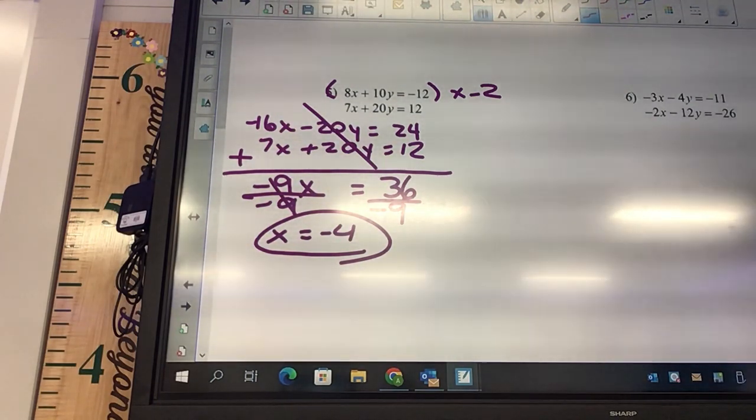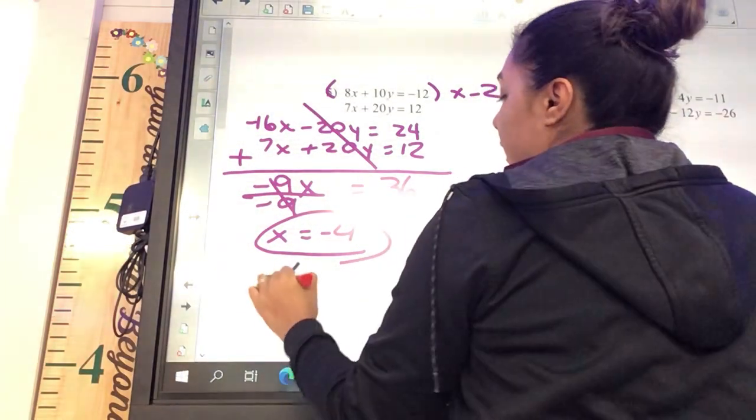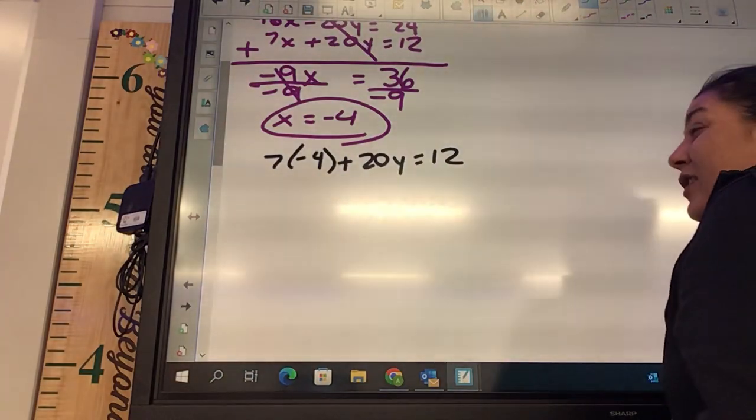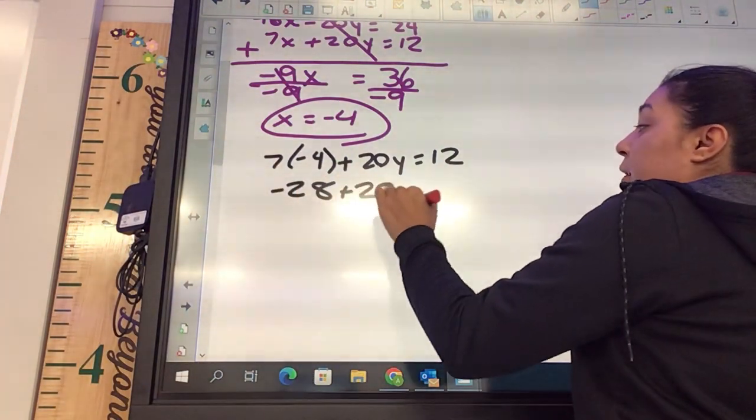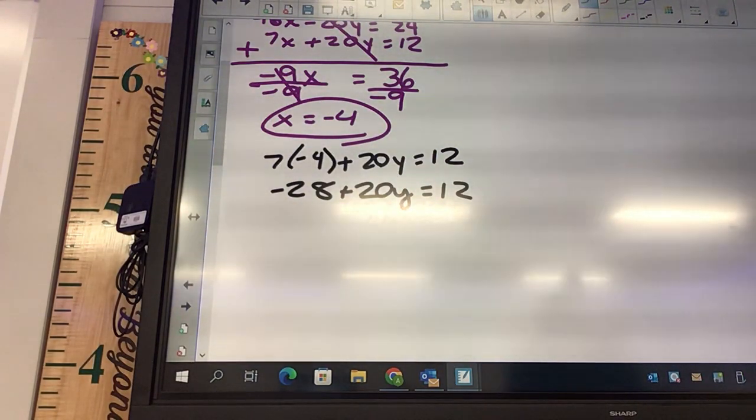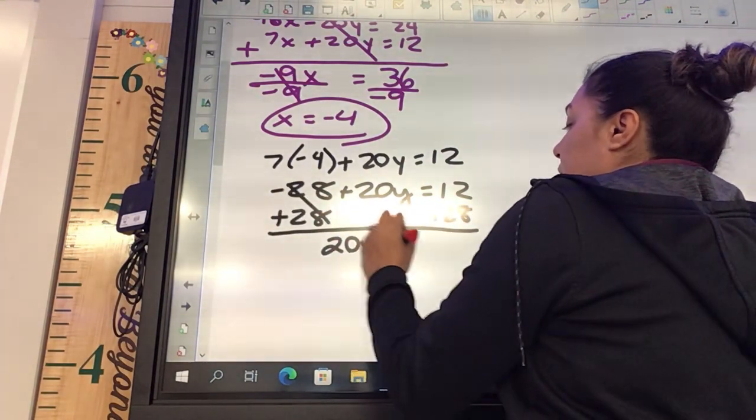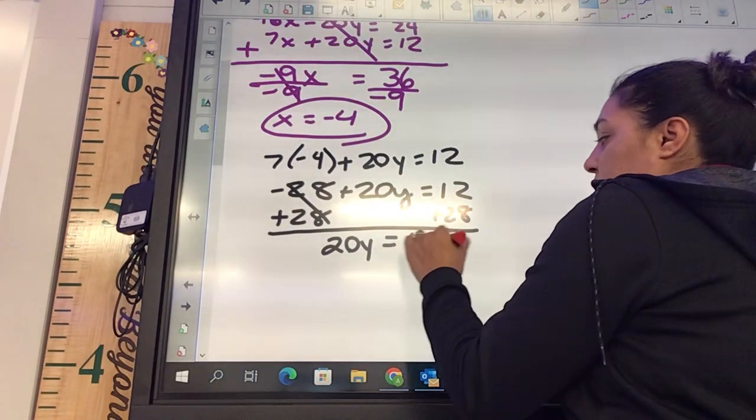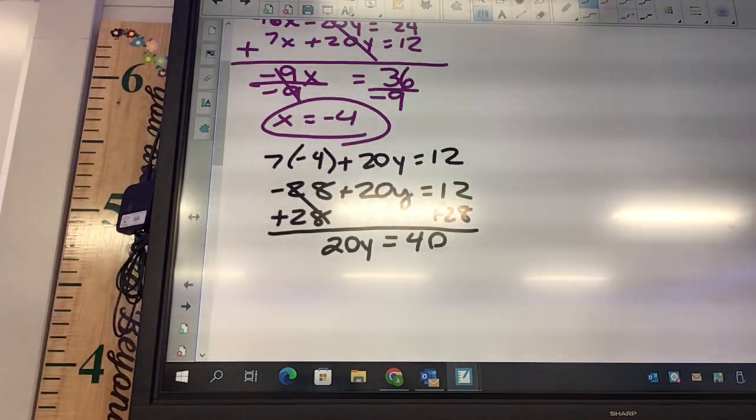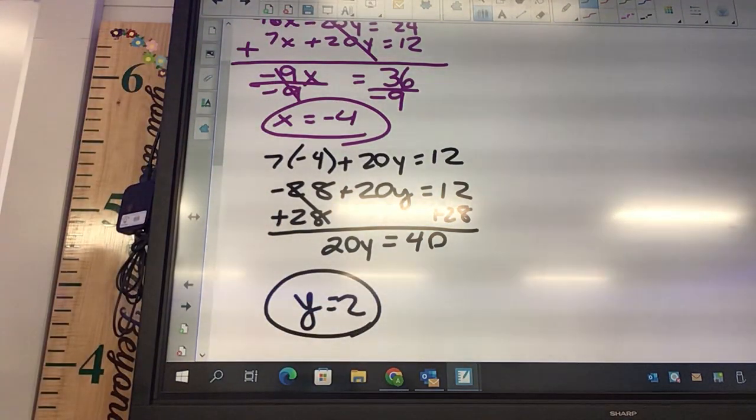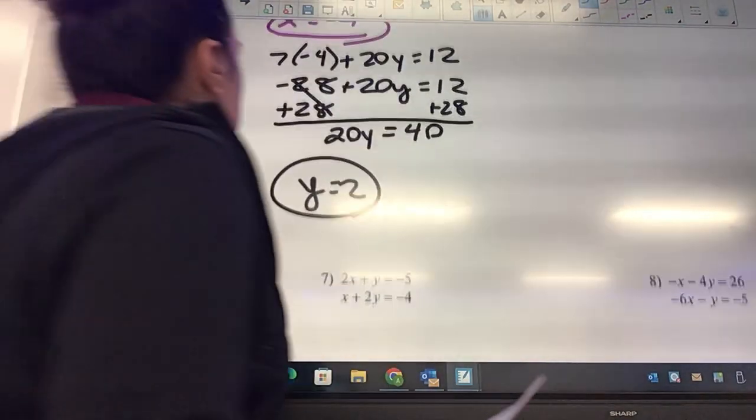Okay, which one you want to plug in? Bottom. All right, so I'm going to get 7 times negative 4 plus 20y equals 12. Okay, so that's going to be negative 28 plus 20y equals 12. We're going to add 28. Okay, so I got 20y equals something, 40? Thanks. Okay, and then we're going to divide, and what's my y going to be? 2. So what's my solution? Negative 4 comma 2.